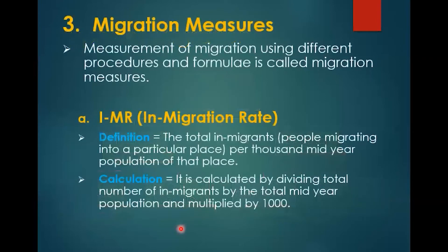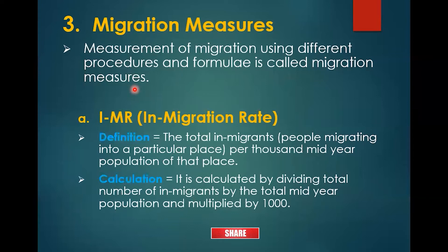Now let's understand what a migration measure is. Measurement of migration using different procedures and formulae is called migration measures. Just like fertility measures and mortality measures, we can also measure migration using different formulae. The first migration measure is IMR — In-Migration Rate. I use a dash to differentiate it from Infant Mortality Rate, so I-MR means In-Migration Rate.